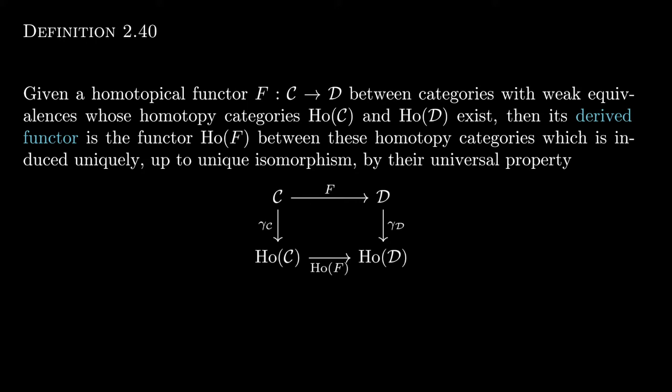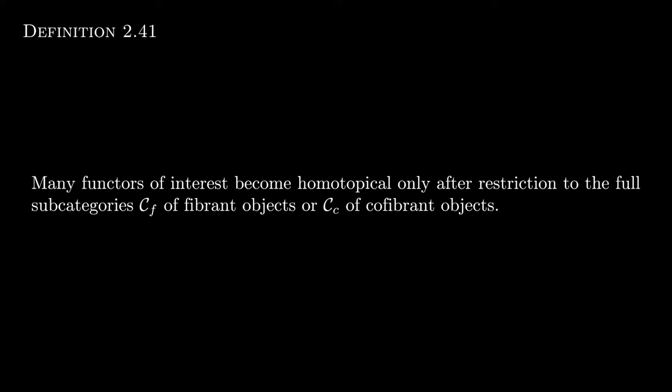We call this induced map the derived functor or total functor of F. Recall that the localizations of the subcategories of fibrant, cofibrant, and fibrant-cofibrant objects are all isomorphic to the original homotopy category. Here is an instance of where that is useful: many of the functors we will study are not homotopical generally, but become so when restricted to CF or CC.